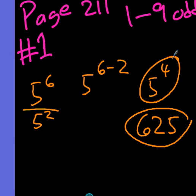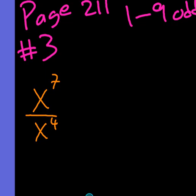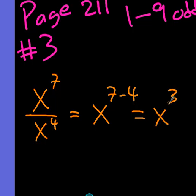Number three: x to the seventh divided by x to the fourth. That's going to equal x to the seven minus four, which is going to equal x to the third power, or x cubed. As a general rule, if it's the third power we'll say x cubed. If it's the second power we'll say x squared.